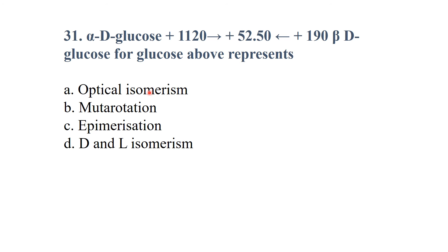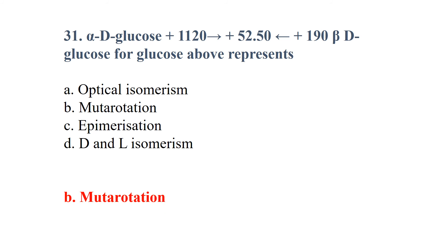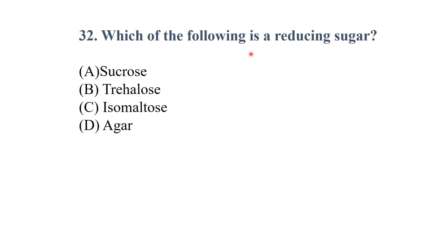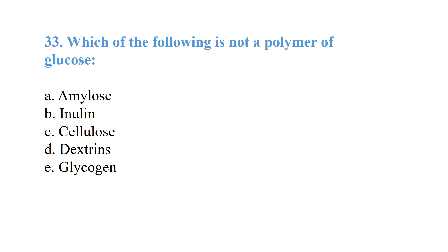The above representation shows the mutarotation, which refers to change in optical rotation. Which of the following is a reducing sugar? Isomaltose is a reducing sugar.